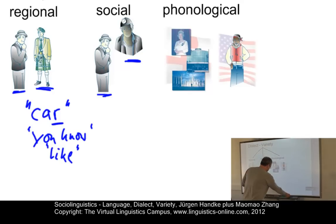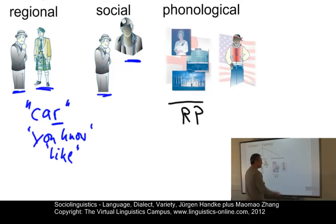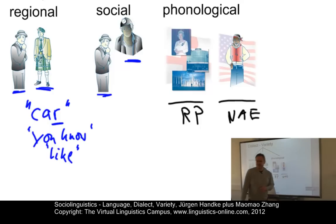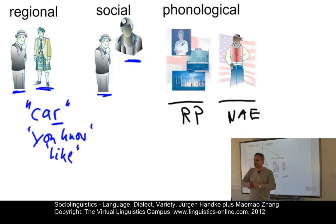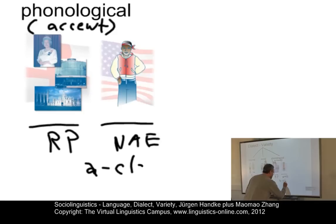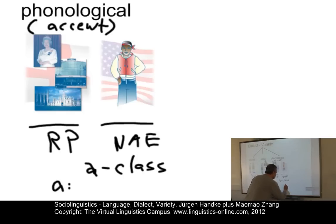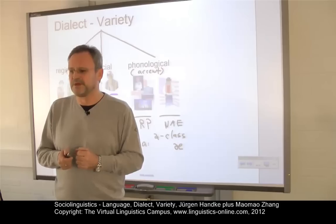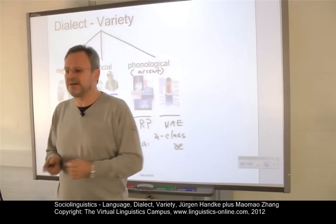Finally, we have the phonological dialect, illustrated by a picture of the Queen indicating Received Pronunciation versus a picture of a person from North America signaling North American English. There are phonological variables that define these two types — and if we look only at phonology, we might call that accent. One distinguishing criterion is the realization of the 'a' class words: in RP you would say 'class,' whereas in North American English you would say 'class.' In many cases it is difficult to distinguish the types of dialect from one another.